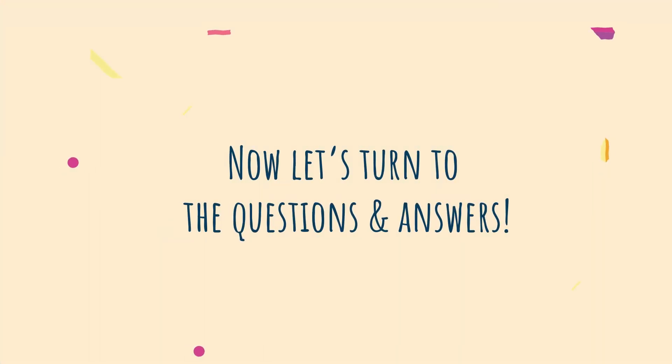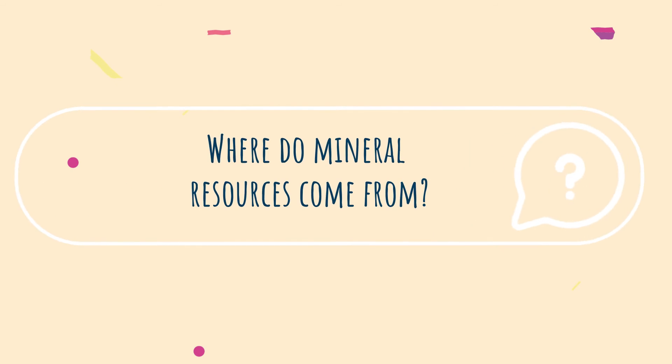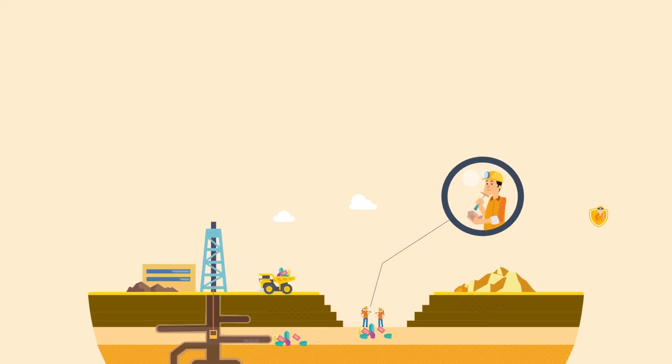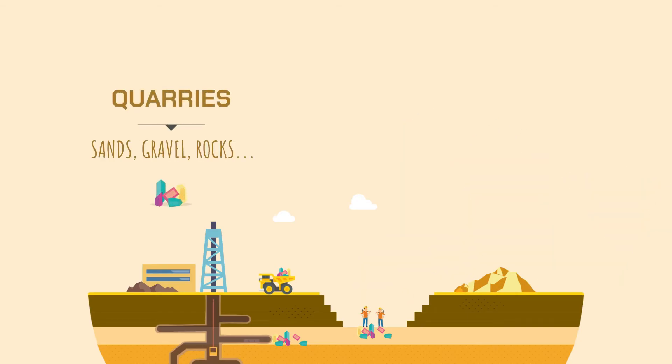Now let's turn to the questions and answers. Where do mineral resources come from? Mineral resources come from underground, extracted from mines and quarries by humans. The geologist is specialized in the study of underground matter. Mineral resources are extracted from quarries, particularly for sand, gravel, and rocks, or from mines to extract gold, copper, or iron, for example.